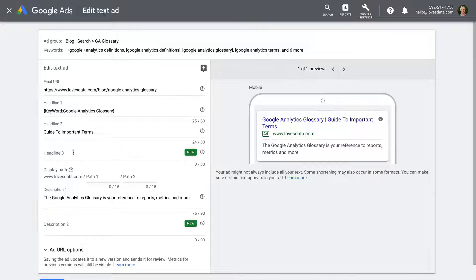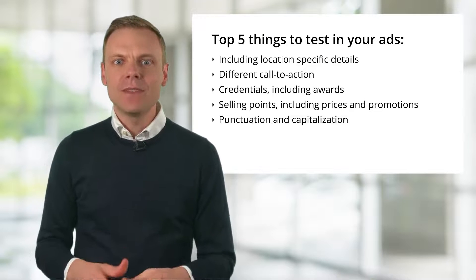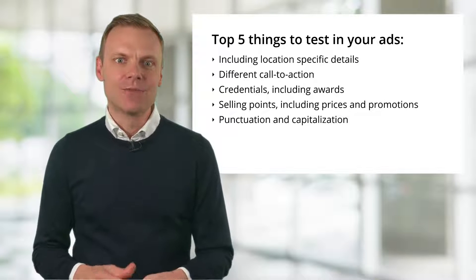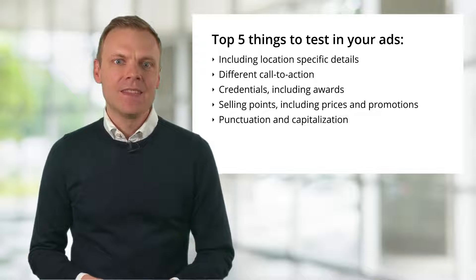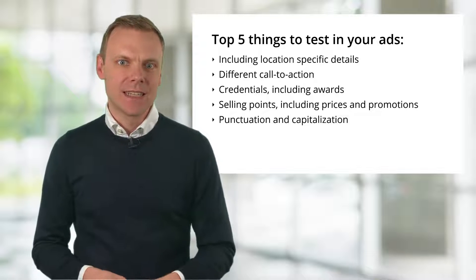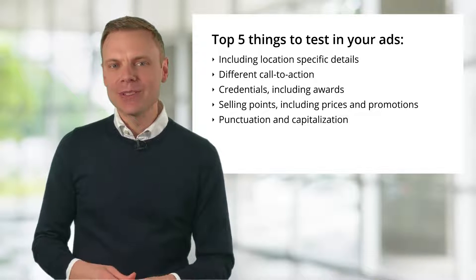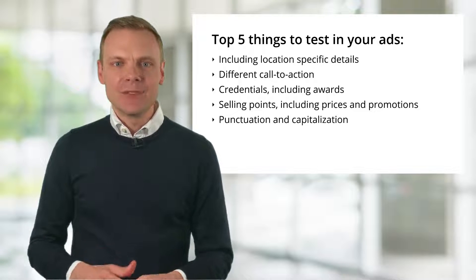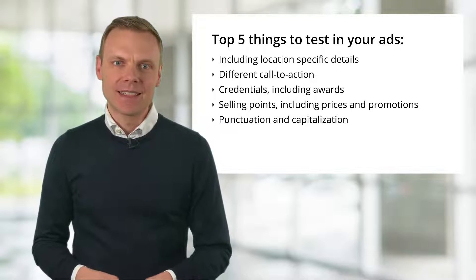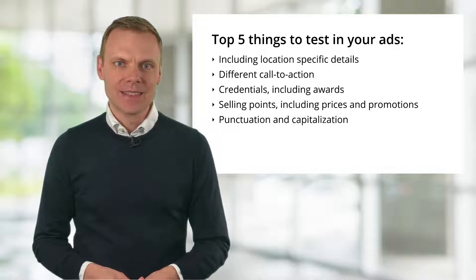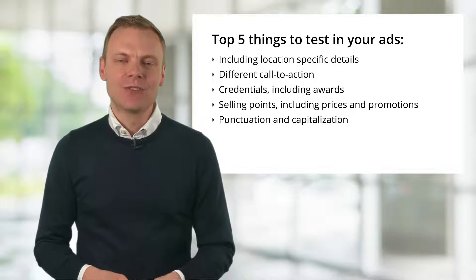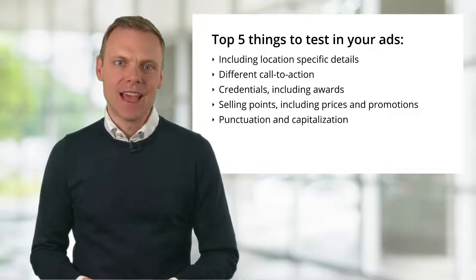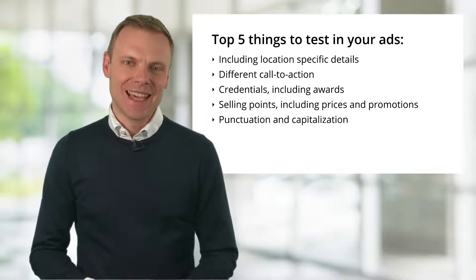Ensure you're using all three available headlines and both available description lines for your ads. Here are five things you can start testing in your ads right now: location-specific details, testing different calls to action, including credentials and awards, trying different selling points, including prices and promotions, and try testing changes to punctuation and capitalization. You should always be testing.